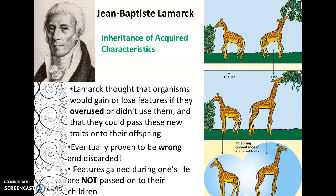It's important to remember that features gained during someone's lifetime are not passed on to their children. A simple way to think about Lamarck's ideas is: if you were to cut your finger off in an accident, your kids aren't going to be missing that finger too, because that's a trait you acquired in your lifetime. We now know that's not true, but it was one of the very first attempts to explain how traits could be changed and passed on over generations.